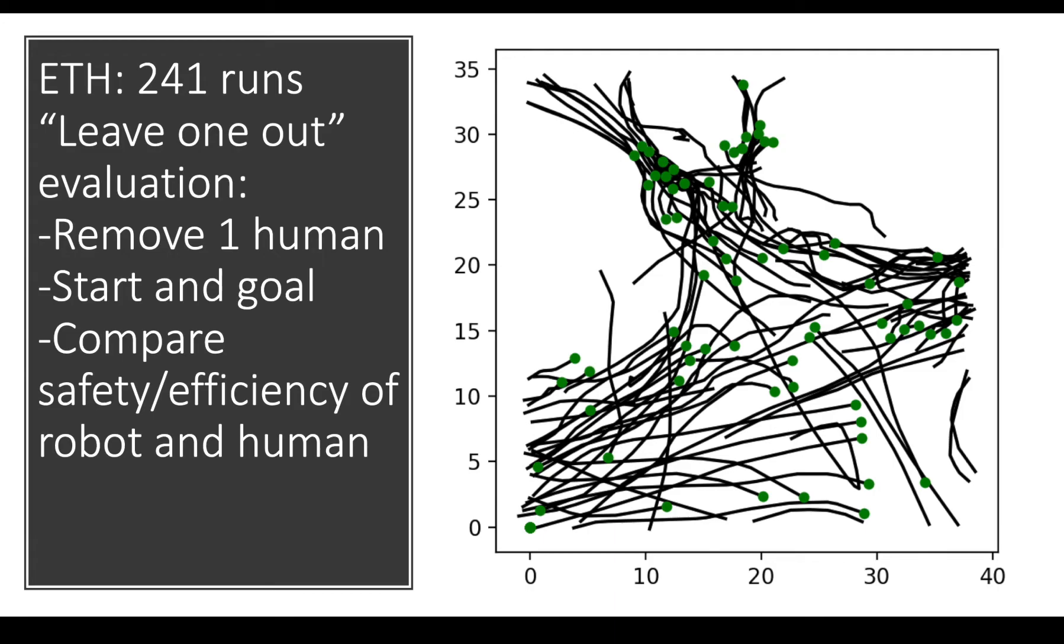So what we're left with and how we chose to test our algorithm is a so-called leave-one-out approach. And so what we do is we take a dataset, in this case ETH, where we have pedestrian trajectories, and we choose one particular human. We find their start and their goal. We remove them and we give the start and the goal to the robot. And then we let the robot run from the start to the goal. And we compare the safety and the efficiency of the robot against the human.